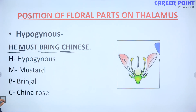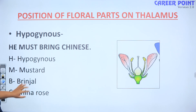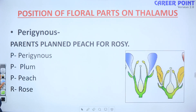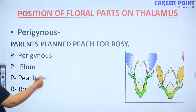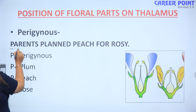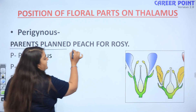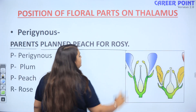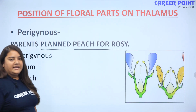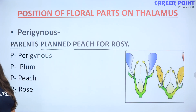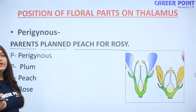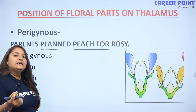The mnemonic for perigynous is: 'Parents plant peach for rosy.'